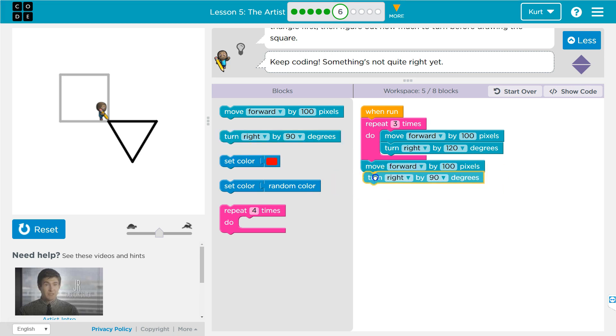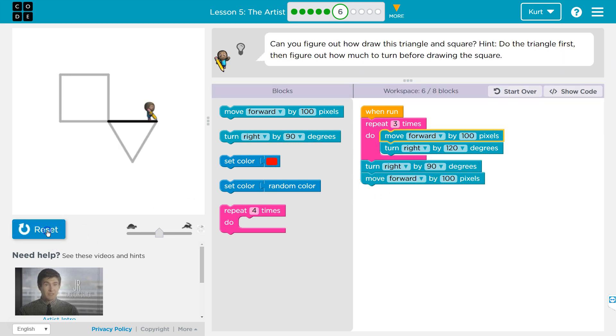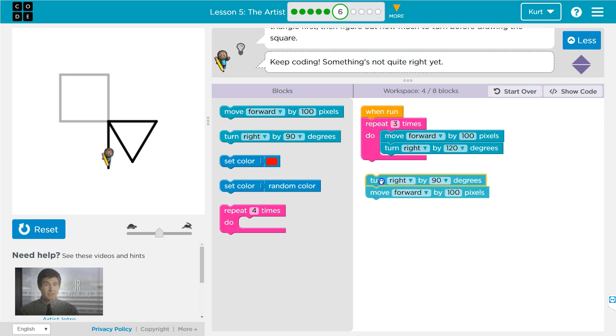If I do right and then forward, once I draw the triangle, I'm going to turn right 90 degrees and go forward. Let's see. Obviously, that's not it either.